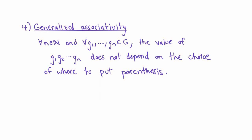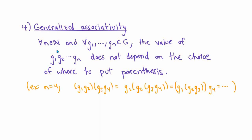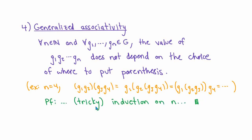The next property is called generalized associativity, or the generalized associative law. The associative law says that when multiplying three elements the parentheses don't matter. The generalized associative law says the same thing for products of n elements, where n is any natural number. For example, when multiplying four elements, you get the same answer regardless of which choice of parentheses you use. This is not difficult to prove but involves a slightly tricky induction on n, so I'm going to skip the proof here.